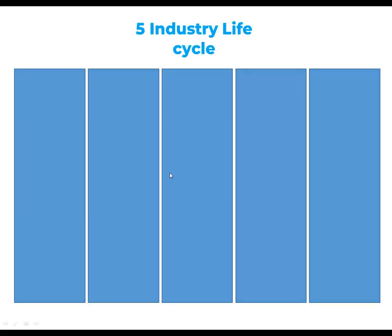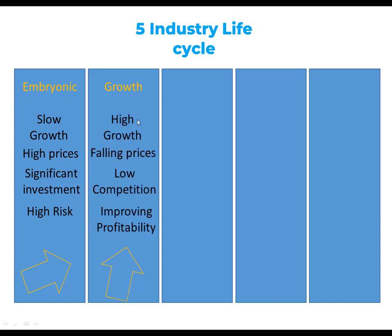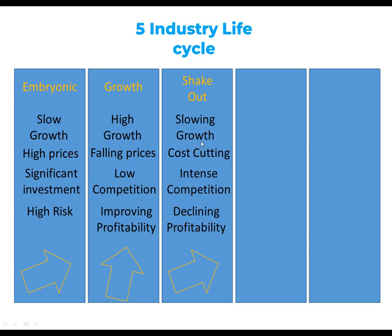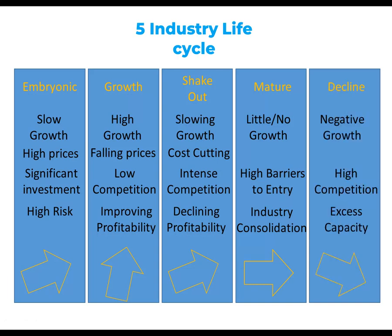Five: industry lifecycle. Embryonic — slow growth, high prices, significant investments, and high risk. Growth — high growth, falling prices, low competition, and improving profitability. Shakeout — slowing growth, cost cutting, intense competition, and declining profitability. Mature — little or no growth, high barriers to entry, and industry consolidation. Decline — negative growth, high competition, and excess capacity.